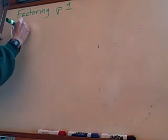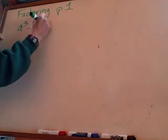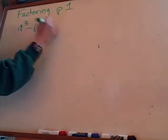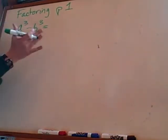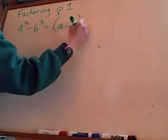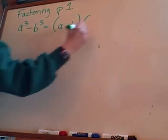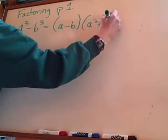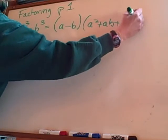So let's write down the formula for the difference real quick. This is a cubed minus b cubed. No matter what a is or b is, it's always going to factor in this form: a minus b times a squared plus ab plus b squared.